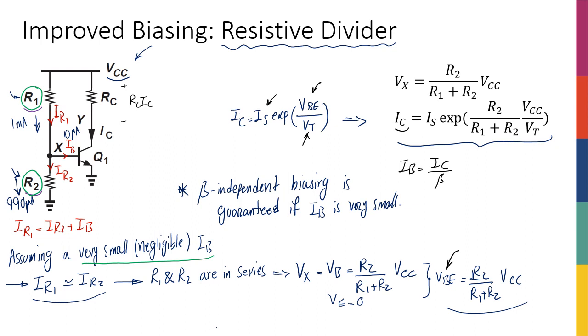Compared to 1 milliamp, it is very small. Compared to 1 microamp, it is actually very large. So we're going to talk in a moment about what does very small means. But then the beta-independence of this biasing technique really comes from the fact that Ib is very small and it can be counted as negligible.